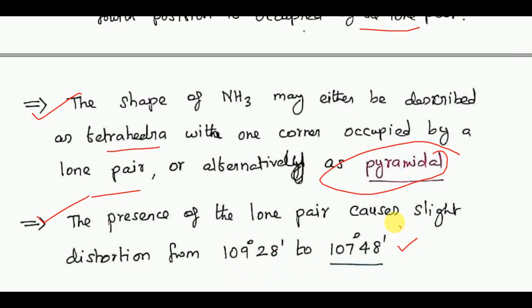The bond angle in ammonia is 107 degrees 48 minutes due to the presence of lone pairs causing slight distortion.